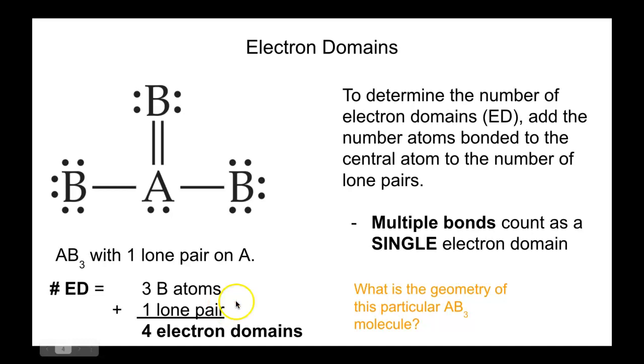There are three electron domains between A and the atoms B, and one lone pair. Keep in mind that multiple bonds do not count as multiple electron domains. The electrons are sandwiched in between the two atoms in the double bond. So no matter how many bonds there are between one pair, that's still only one electron domain.